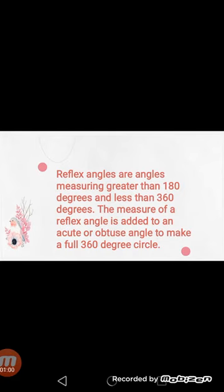If you choose the smaller angle, you might have an acute angle or an obtuse angle instead. The larger angle is the reflex angle, and we know that the degrees of a circle is 360 degrees, or we can say a complete turn has 360 degrees. When we add our acute or obtuse angle to the reflex angle, it makes a 360 degree circle.